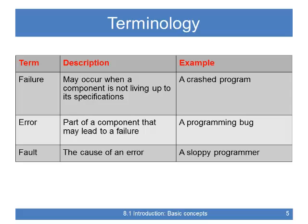Let's introduce some terminology. We have failures, errors, and faults. A failure may happen when a component is not living up to its specifications — it's not doing what it's supposed to do; that's for example a crashed program. An error is conceptually that part of a component that may lead to a failure — a programming bug. We all know there are lots of bugs in software, and what we hope is that none of these bugs will actually pop up.